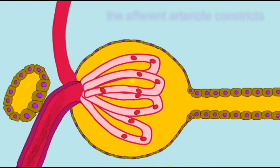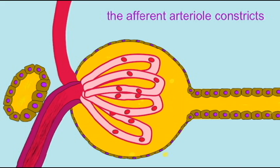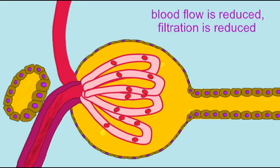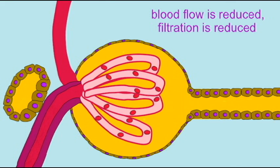the macula densa releases vasoconstrictor, a signal which causes the constriction of the smooth muscle around the afferent arteriole. This reduces blood flow to the glomerular capillaries and thus reduces the amount of filtrate being formed.